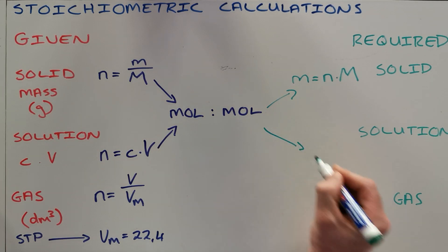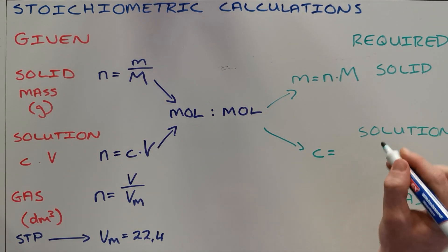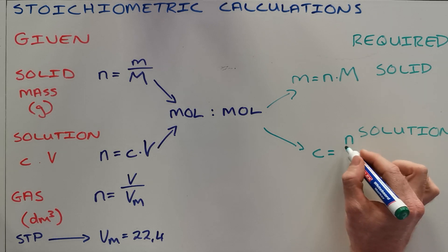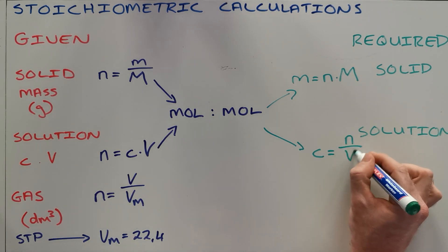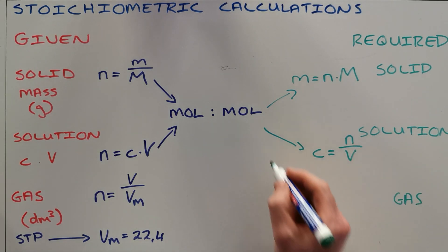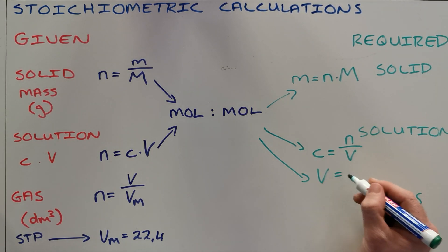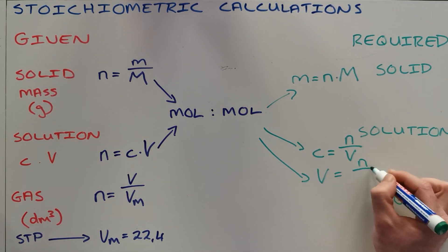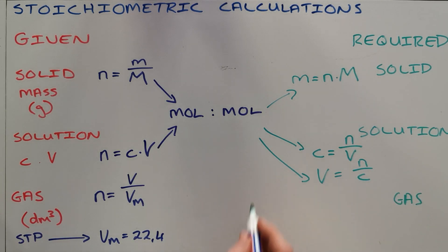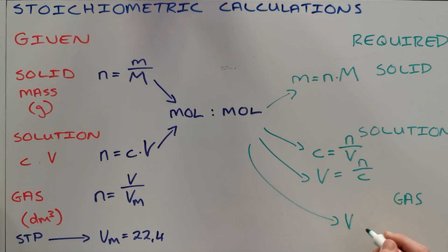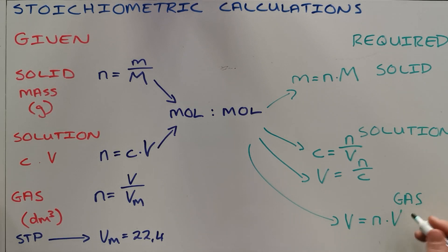If you were asked for the concentration of the solution, you would calculate that by finding the number of moles over the volume of that solution. You could also be asked for the volume of the solution, which would be the number of moles over the concentration. If you were asked to calculate the amount of gas produced, again assuming this is at STP, your volume equals the number of moles multiplied by the molar gas volume.